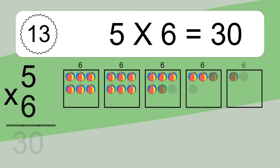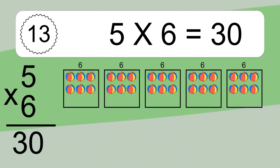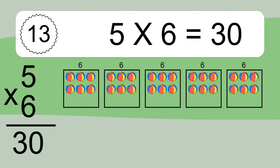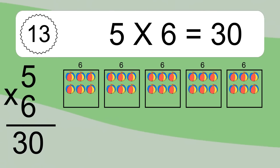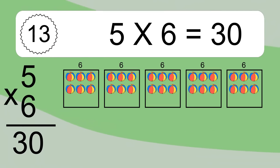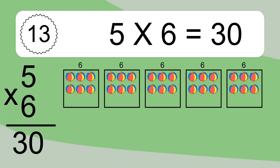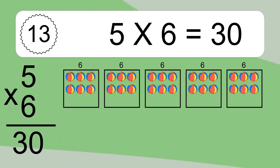5 times 6 equals what? 5 times 6 equals 30. We have 5 boxes and each box has 6 colorful balls inside. If you count all the balls in all the boxes together, you will have 5 times 6 balls. This equals 30 balls.